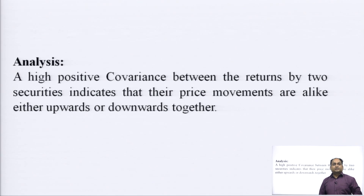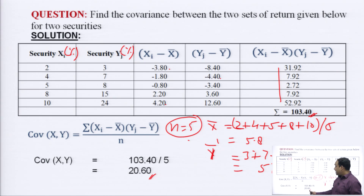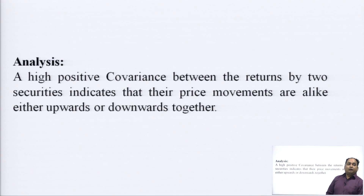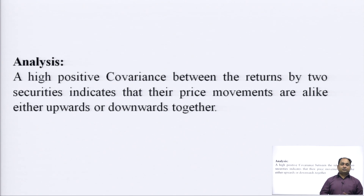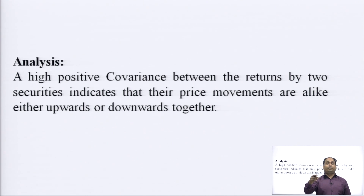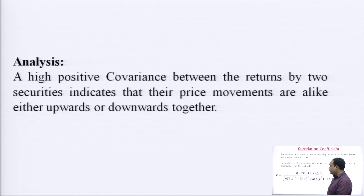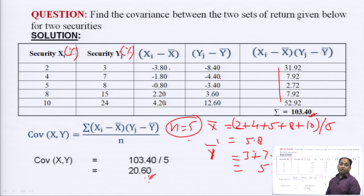The analysis: a high positive covariance of 20.6 between the returns of the two securities indicates that their price movements are alike — either upward or downward together. Once one security is going up, the other security will also go up. Once one security is going down, the other will also go down, at a high positive variation of 20.6.